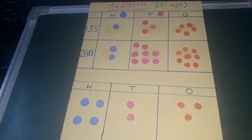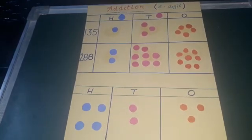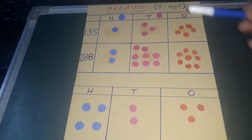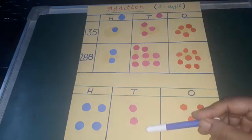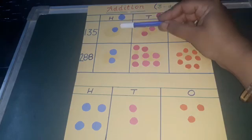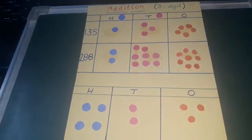So how we did it? First of all we added ones. Then carry. Then we added tens. Then carry, 3, and then we added hundreds. So answer we get 423.